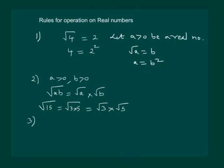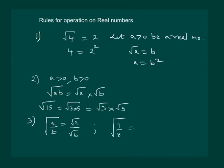For positive numbers a and b, under root of a divided by b is equal to under root of a divided by under root of b. For example, under root of 7 by 8 will be equal to under root of 7 by under root of 8.